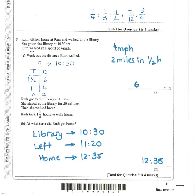Question 9: Ruth left home at 9am and got to the library at 10:30, so she walked for 1 and a half hours. She walks at 4 miles per hour, meaning she does 4 miles every hour and 2 miles in half an hour. So in 1 and a half hours she walks 4 plus 2 equals 6 miles.